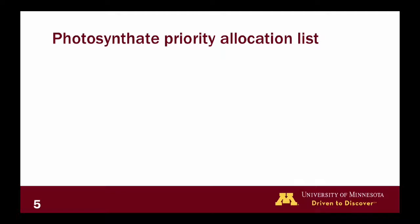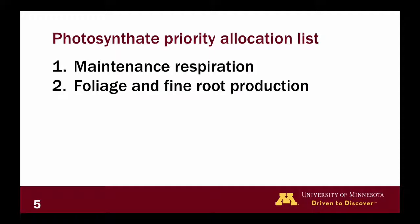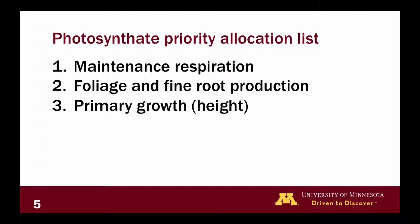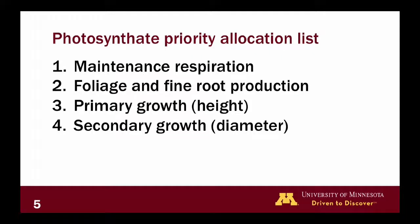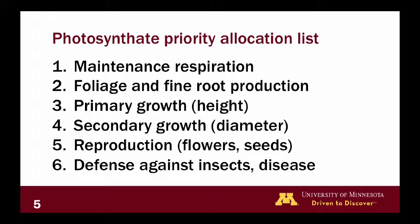As we unpause, the first thing trees need to do is maintenance respiration. Then they move on to foliage and fine root production. Next is primary growth — remember, we grow up before we grow out, so trees increase in height before putting on secondary growth of diameter. Then trees allocate resources to reproduction, such as flowers and seeds. And finally, defense against insects and diseases — that one can shift depending on whether the tree is under stress or being attacked, and can move up the priority list.